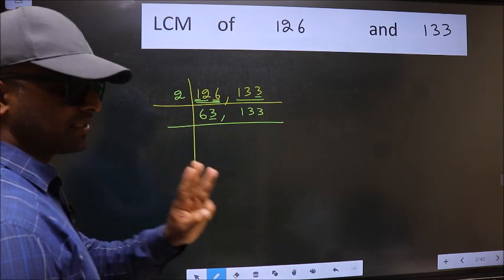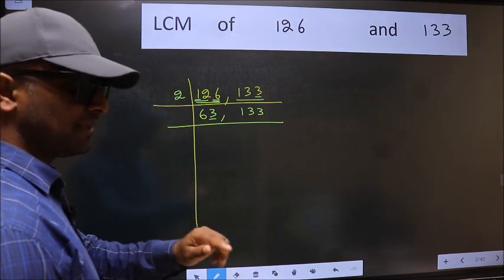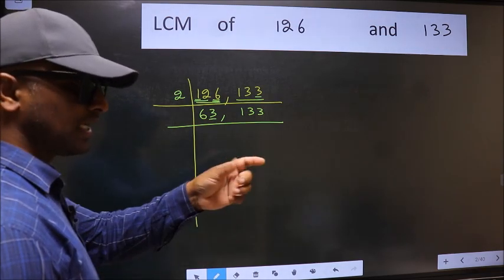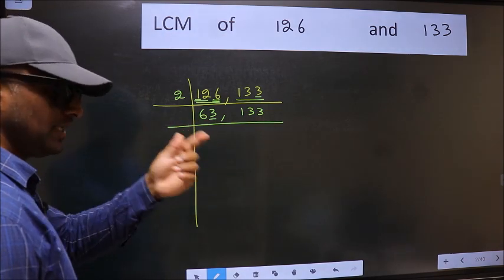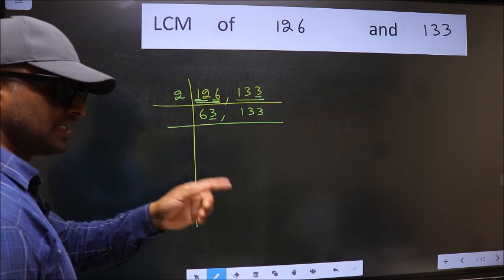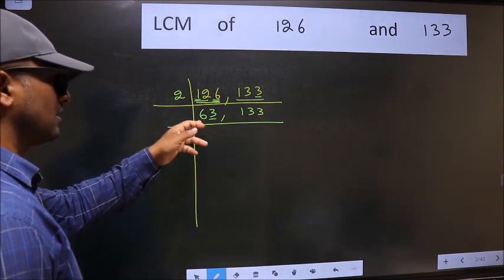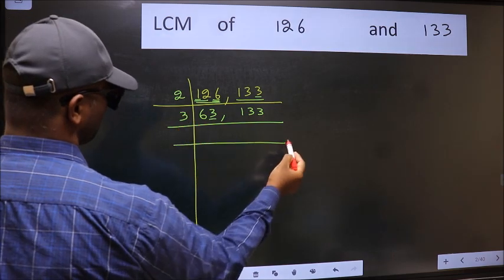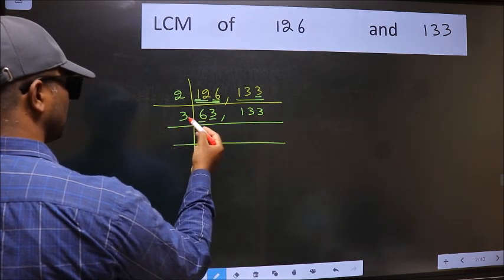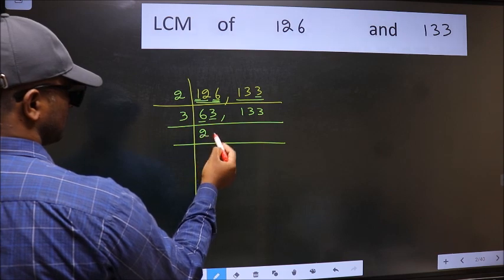Next prime number 3. To check divisibility by 3, add the digits. 6 plus 3 is 9, and 9 is divisible by 3. So this number is also divisible by 3. Take 3. First number 6, when do we get 6 in 3 table? 3, 2, 6.